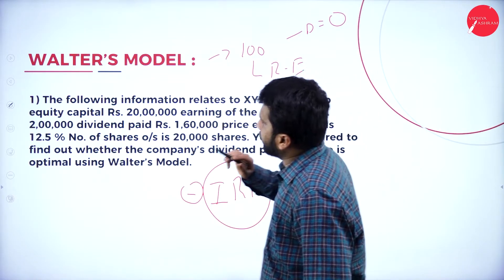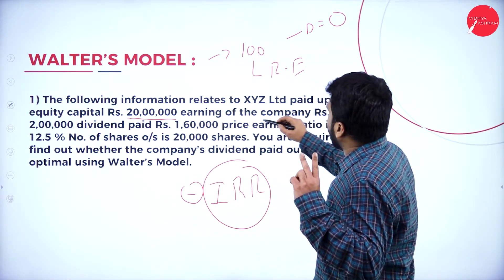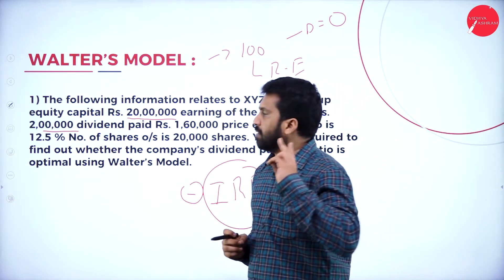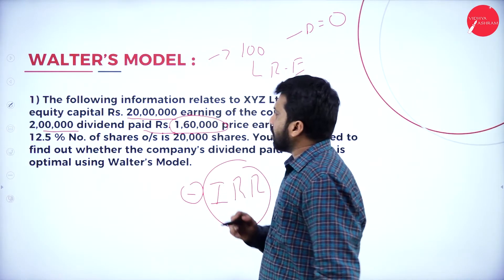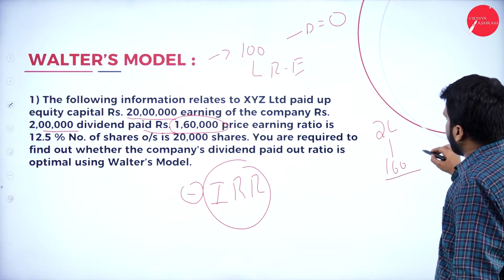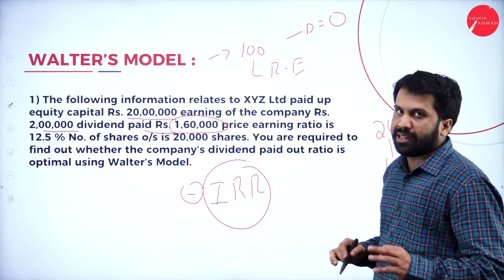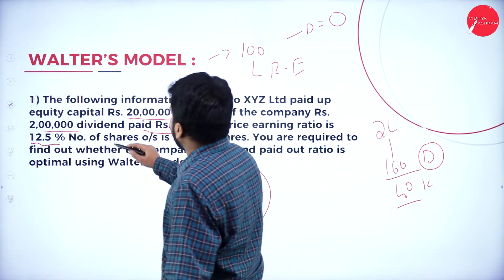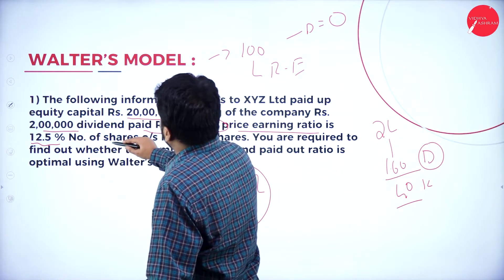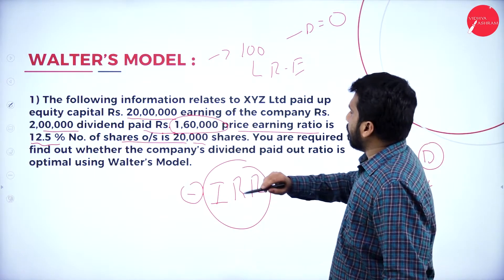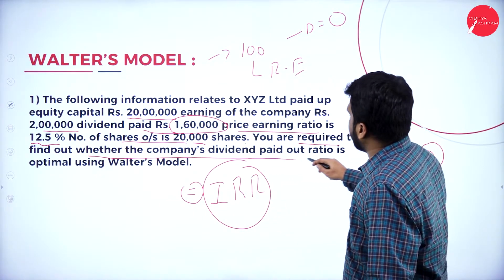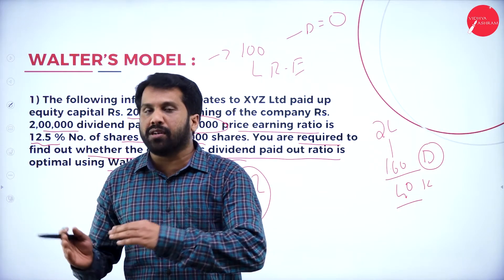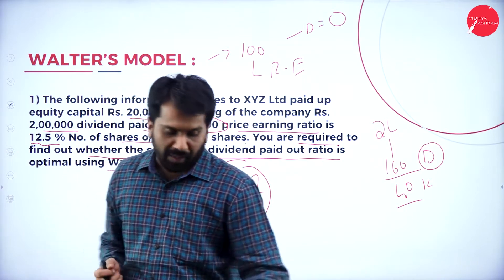The following information is given for company XYZ: capital is 20 lakh, earnings of the company are Rs. 2 lakh. Capital invested is 20 lakh, income earned is almost 10% — 2 lakh. Dividend paid is 1 lakh 60,000. Out of 2 lakh, 1 lakh 60,000 is given as dividend, so only 40,000 is left. Price-earnings ratio is 12.5. Number of shares outstanding is 20,000. You are required to find out whether the company's dividend payout ratio is optimal using Walter's model.